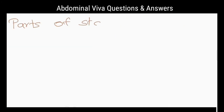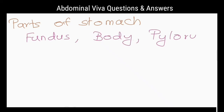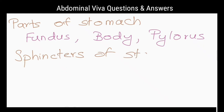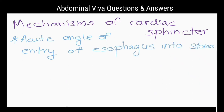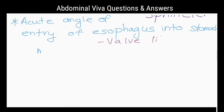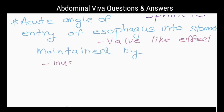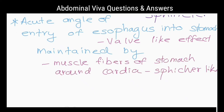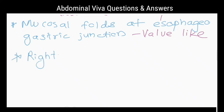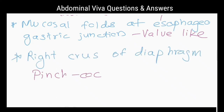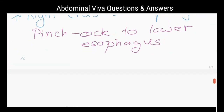What are the parts of the stomach? Fundus, body, and pylorus. What are the sphincters of the stomach? The cardiac sphincter and pyloric sphincter. What are the mechanisms of the cardiac sphincter? The acute angle of entry of the esophagus into the stomach produces a valve-like effect. This acute angle is maintained by the arrangement of muscle fibers of the stomach around the cardia, and they also act as a sphincter. Mucosal folds at the esophageal-gastric junction act as a valve.